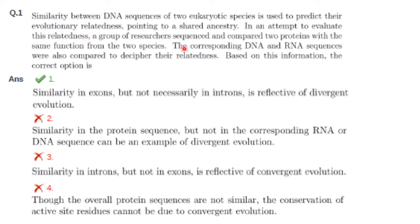Researchers sequenced and compared two proteins with the same function from two species, and their corresponding DNA and RNA sequences were also compared to decipher their relatedness. They found that these are closely related species. All of this shows that the question speaks mostly of divergent evolution, not convergent evolution. So options 3 and 4 can be easily eliminated because they mention convergent evolution; the answer involves divergent evolution.